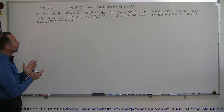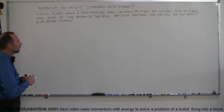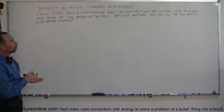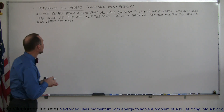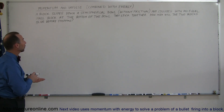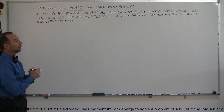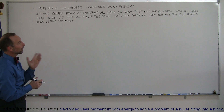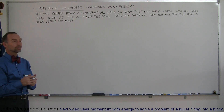So let's read the problem, and then you'll see in just a moment how this is applied. We have a block that slides down a semi-spherical bowl without friction and collides with an equal mass block at the bottom of the bowl. They stick together, and presumably they'll continue sliding up the side of the bowl. How high will the two blocks slide before they come to a stop?